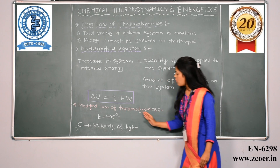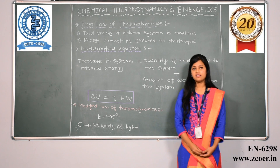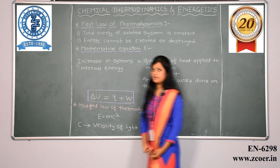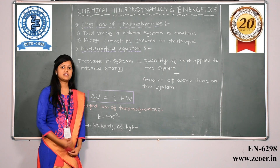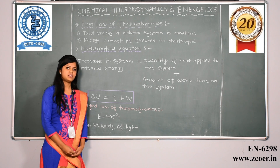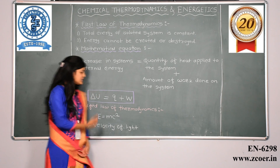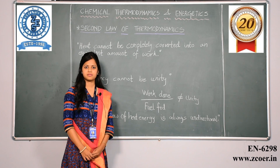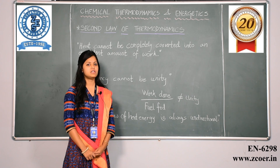Now the modified law of thermodynamics states that energy and mass are equivalent and they are related to each other. This modified law is represented by Einstein's equation: E = MC², where E is the energy equivalent of mass and C is the velocity of light. The second law of thermodynamics states that heat energy cannot be completely converted into an equivalent amount of work.